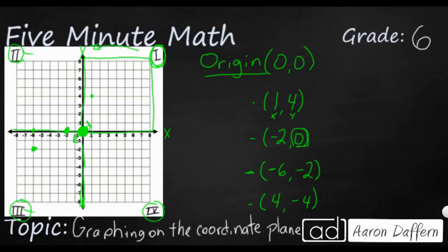And then finally (4, -4). Always reading from left to right, you have 1, 2, 3, 4, positive 4, and then -4 means we're going down into quadrant 4. So here is our dot. So that's just the basics of how you're going to be plotting in all four quadrants on the coordinate plane.